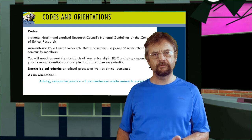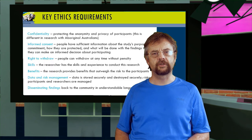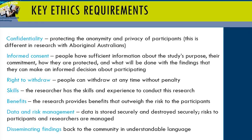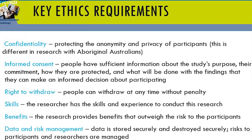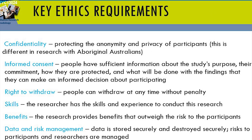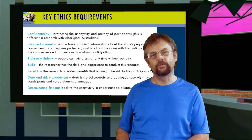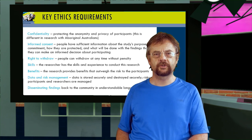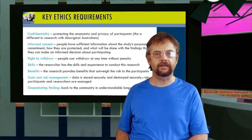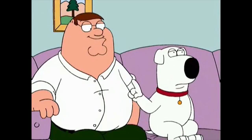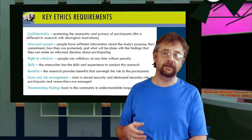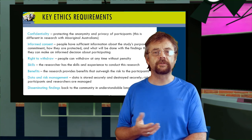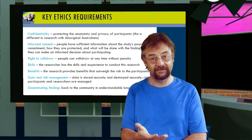There are some key ethical requirements in the code and in most codes. First, there's confidentiality — this is about protecting the anonymity and privacy of the participant. There can be a lot of confusion about this. Ordinarily, when someone says something to you in confidence, that means you should not share what they've said with anyone else. If friend A tells you something in confidence, you wouldn't then go to friend B and tell them what friend A said.